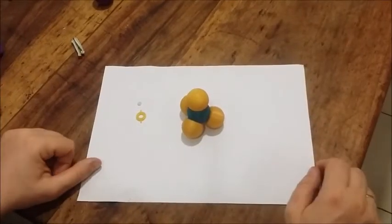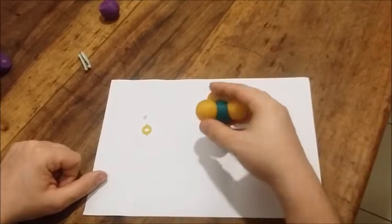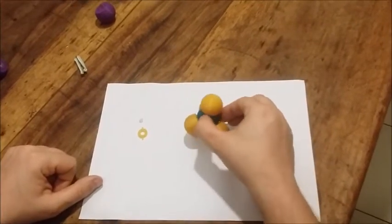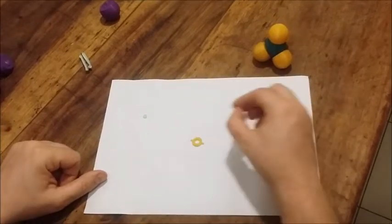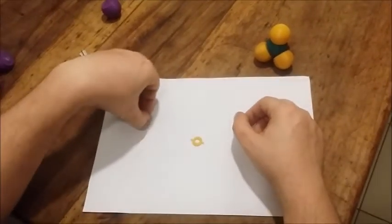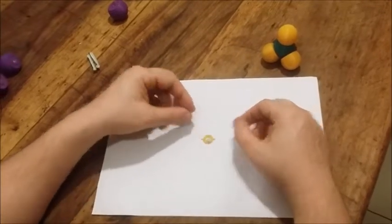So this is the molecule set that you can print. Here this is a methane molecule. What you have to do first is when you print these rings, you have to glue in a small magnet using a glue gun.